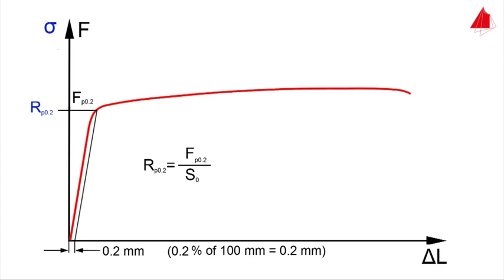Tensile strength, percentage elongation after fracture, and percentage reduction of area are calculated in the same way as in the first test.